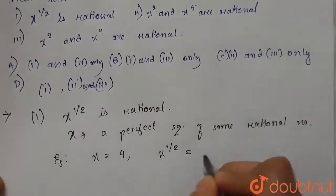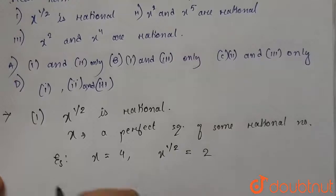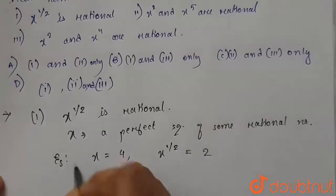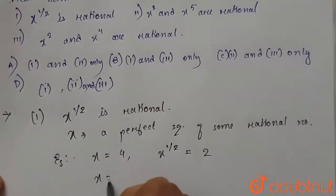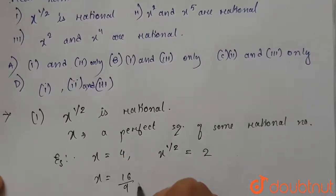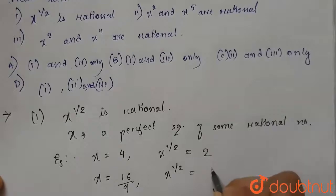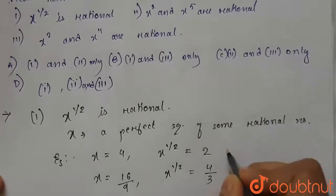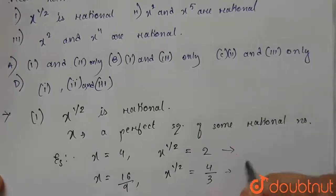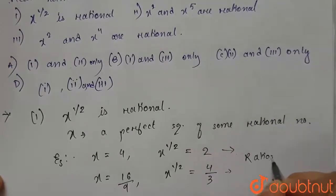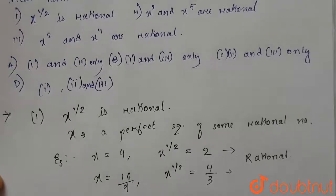...will be equal to 2. And if x equals 16 by 9, then x to the power half will be equal to 4 by 3. Both of these are rational numbers.